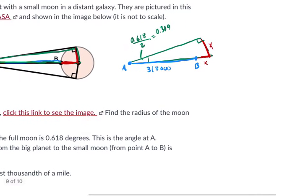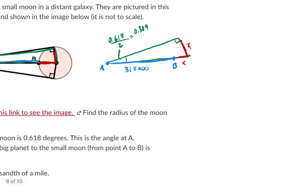So we need to find x. Well, we've got the opposite and we've got the hypotenuse. This is the opposite. This is the hypotenuse of the triangle. So let's use sine. Right? There must be a way to do it. So the sine of 0.309 equals opposite. That's the x over. What is that hypotenuse? Well, it's 318,000 plus x. 318,000 plus x.